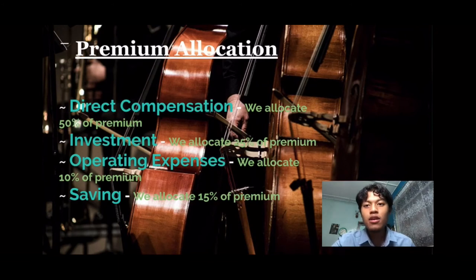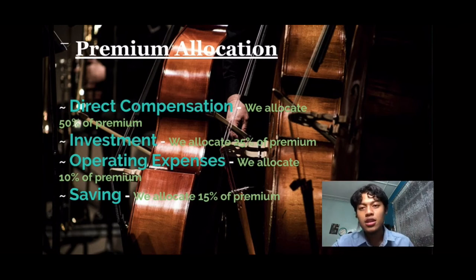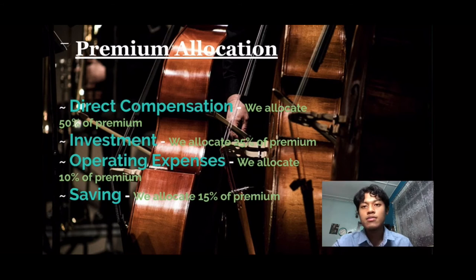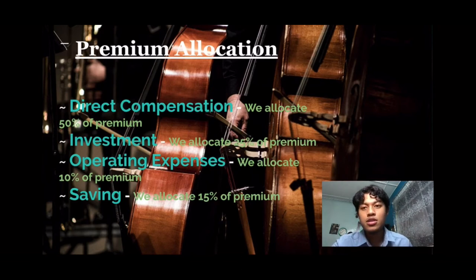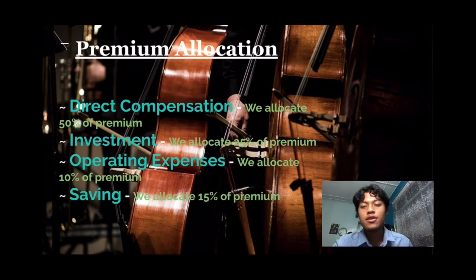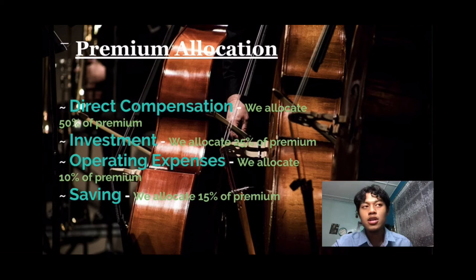We continue to the premium allocation, divided into four categories. The first is direct compensation — when a customer wants to claim their insurance directly when something happens to them and they qualify to claim. We allocate 50% of the premium to direct compensation. For investment, we allocate 25% of the premium to expand our money. For operating expenses, we allocate 10% of the premium to maintain our product.